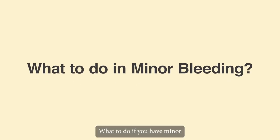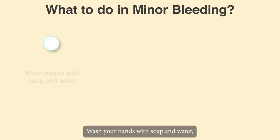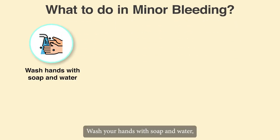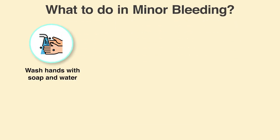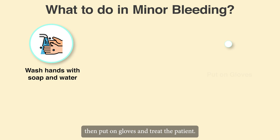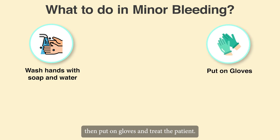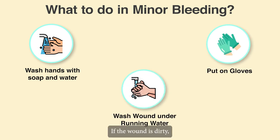What to do if you have minor bleeding cuts and wounds? Wash your hands with soap and water. Then put on gloves and treat the patient. If the wound is dirty, wash it under running water.